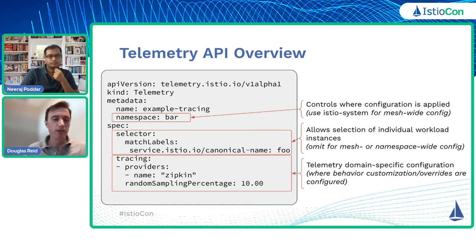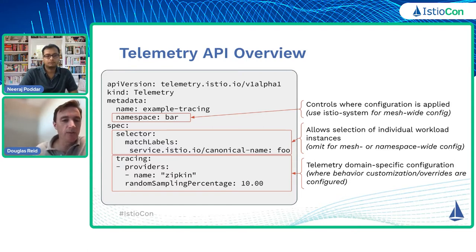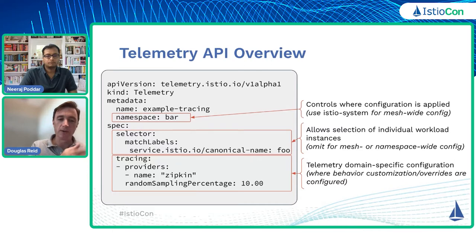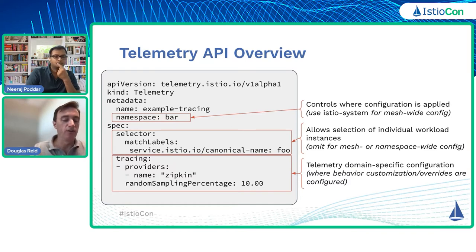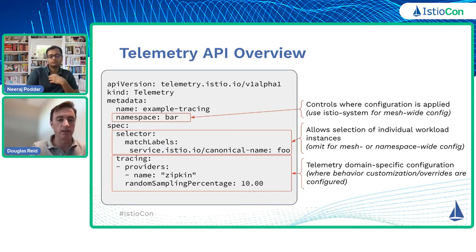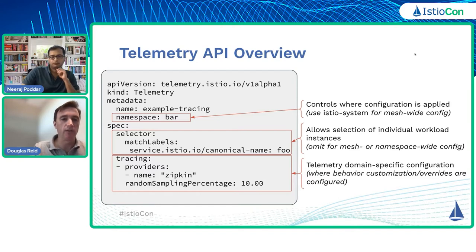Here's an example telemetry resource. This will look very familiar to anyone who's used Kubernetes — you declare them in a namespace that controls where the configuration is applied. The Istio configuration namespace (istio-system by default) applies mesh-wide; other namespaces apply just for that namespace. Inside the spec you can select groups of workloads or individual workloads by label. Here I'm selecting the 'foo' workloads in namespace 'bar'. Then there is per-domain configuration — tracing, access logging, and metrics. Here we're saying for tracing, I want to enable it, send traces to my Zipkin provider, and sample new requests at 10%.